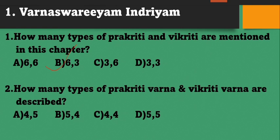The 6 types of Pragridhi are: Jadiprasakta, Kulaprasakta, Deshanupadini, Kalanupadini, Vayonupadini, and Pratyatmaniyada. The 3 types of Vigridhi are: Lakshananimitta, Lakshanimitta, and Nimittanuruba.